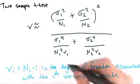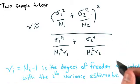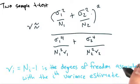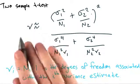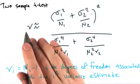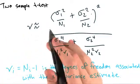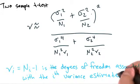Where nu i is equal to ni minus 1, and this is the degrees of freedom associated with the i-th variance estimate. If you're unfamiliar with degrees of freedom, it might be a good idea to brush up on your stats concepts with Udacity's Intro to Stats course. A link is provided in the instructor comments.